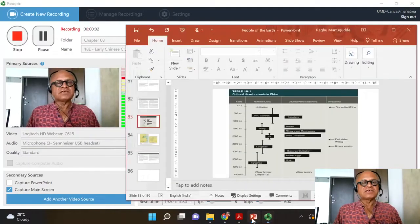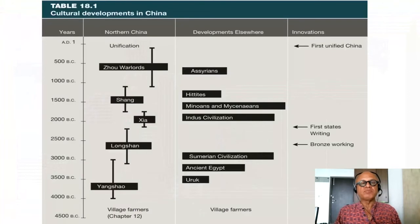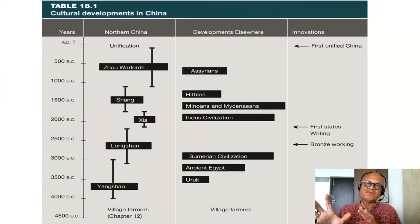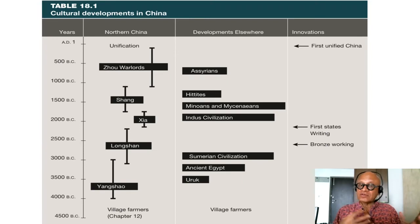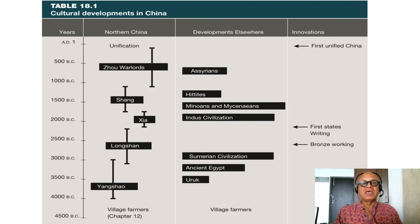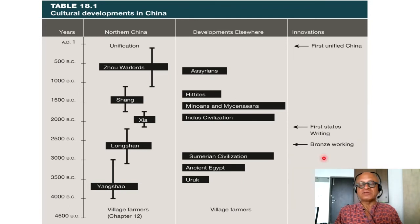We have a few more civilizations left to cover from this book, People of the Earth. I'm putting these as supplementary information. The book is not so much focused on climate at all — there is a little bit of agriculture involved in it, and of course climate is a background for it. I'm just giving it as supplemental information and a very brief introduction to each of the chapters from the book.